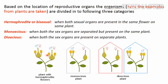Taking the examples of plants, organisms are classified into three categories. The first are hermaphrodites or bisexuals — when both sex organs of male and female are present in the same flower or on the same organism, that plant is called a hermaphrodite. Here both flowers on the same plant are bisexual, as represented by their symbols.